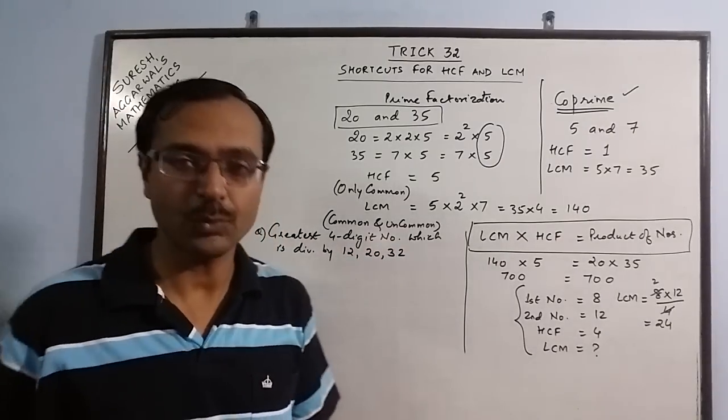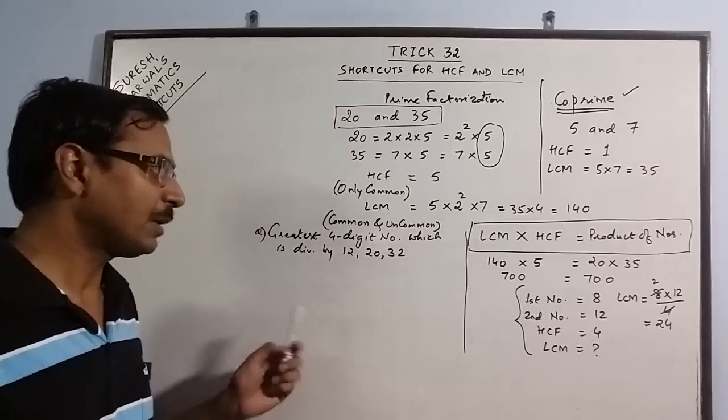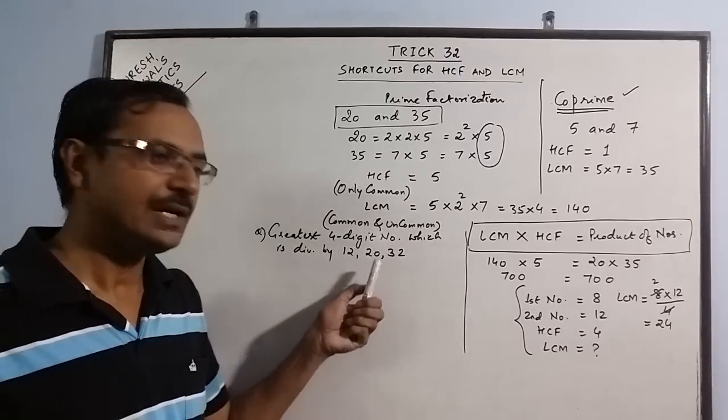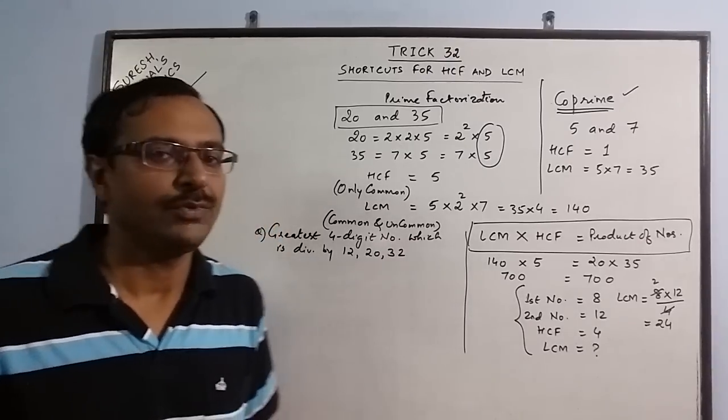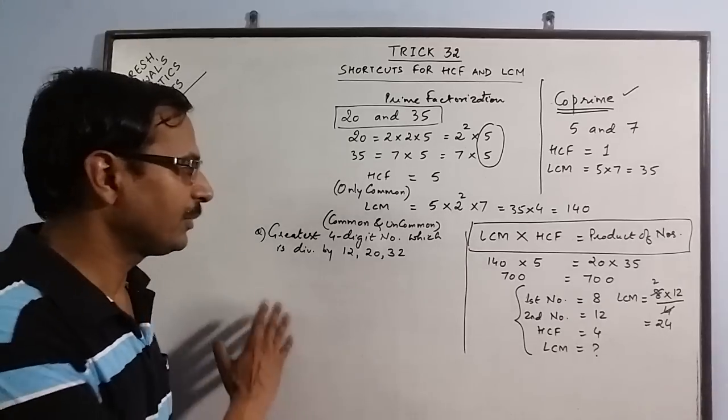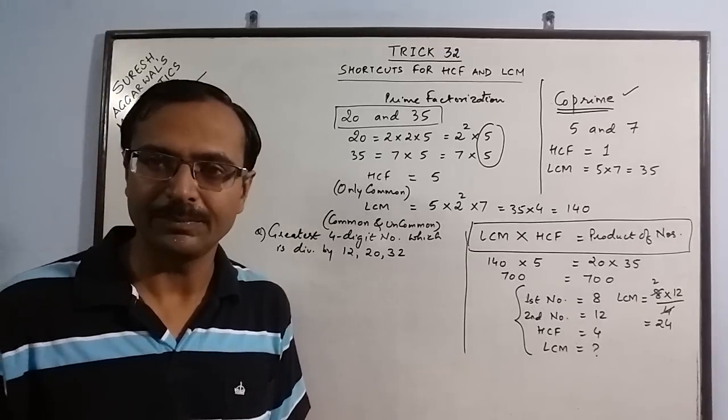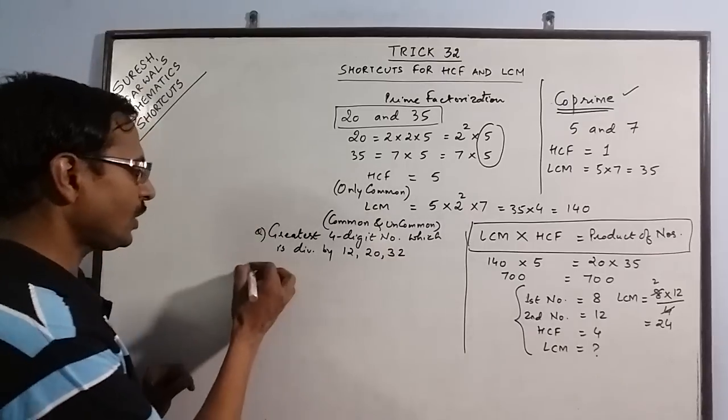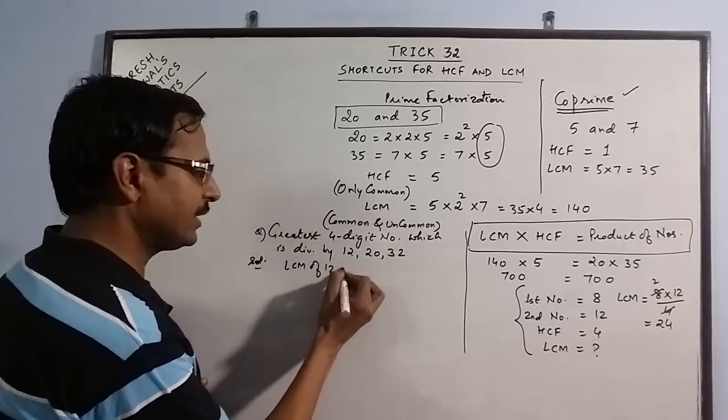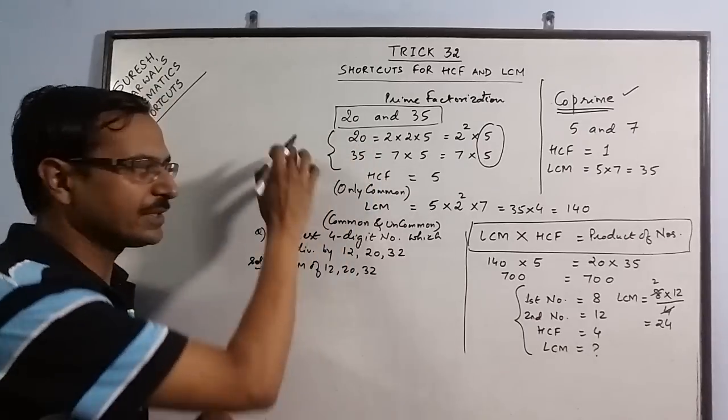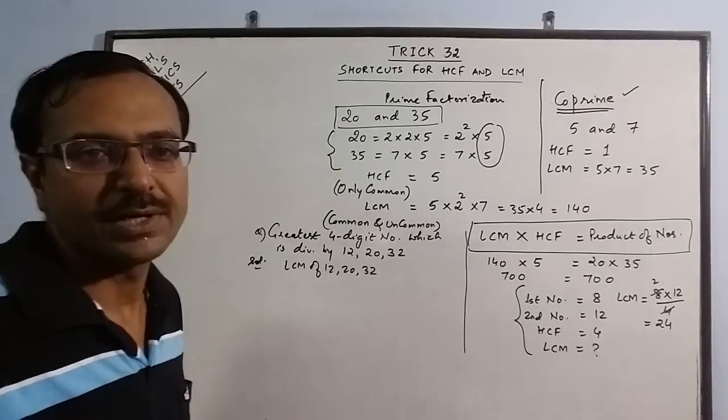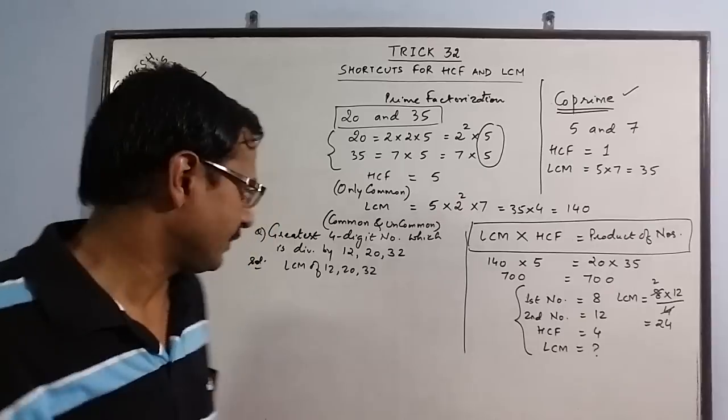We have to find the greatest 4 digit number which is divisible, divisible means exactly divisible by 12, 20 and 32. Now these kind of problems involve the use of LCM. Now for solving this we just find the LCM of 12, 20 and 32. You can utilize this method which I discussed just now and you will come to the result regarding the LCM.